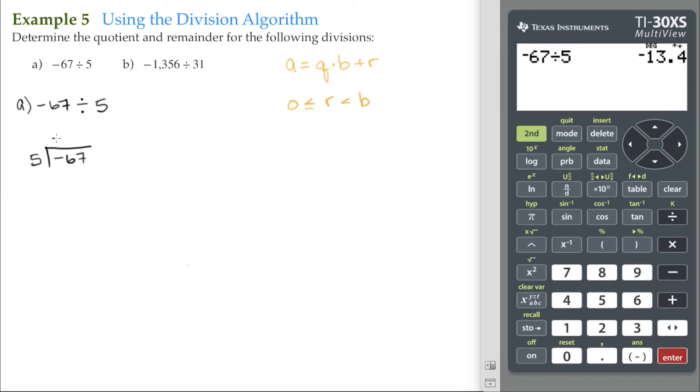Our quotient is negative 14. We then do negative 14 times 5, which gives us negative 70. Remember, the key here is that we subtract this.